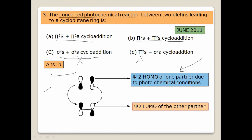For ethylene, there are two orbitals: ψ1 (bonding MO) and ψ2 (anti-bonding MO). Under photochemical conditions, one electron from ψ1 is promoted to ψ2, so ψ2 becomes the HOMO (or LUMO for the other partner). Supra-supra addition is allowed under photochemical conditions, so the correct answer is B.